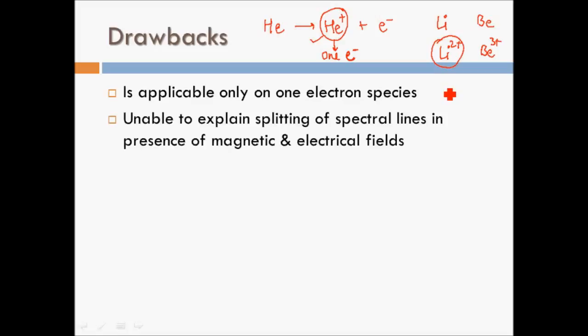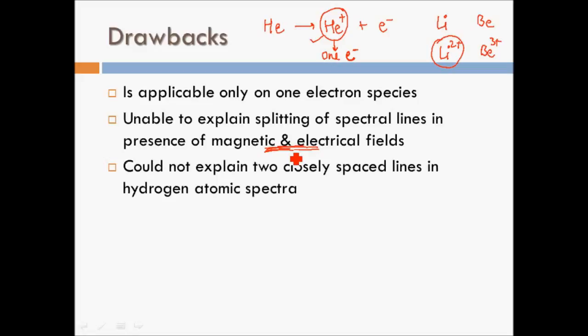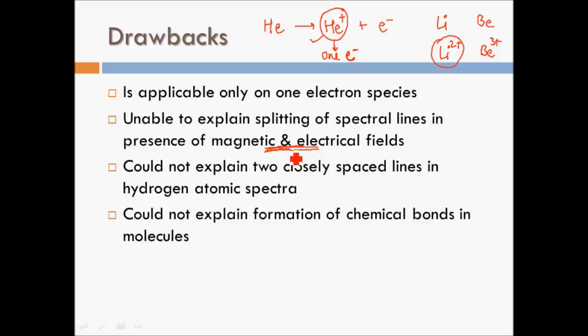Bohr was unable to explain the splitting of spectral lines in the presence of magnetic and electric fields. He also could not explain the closely spaced lines in hydrogen's atomic spectrum. We'll study what this means and how these spectral lines can be explained by other models in a later session.